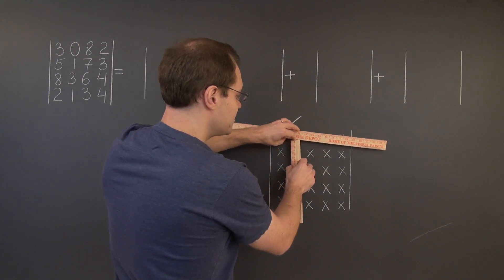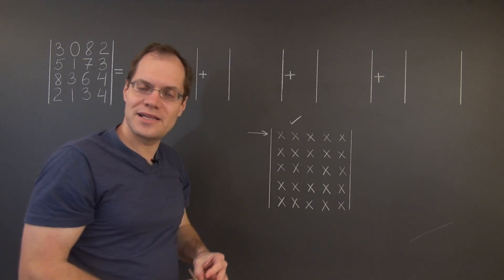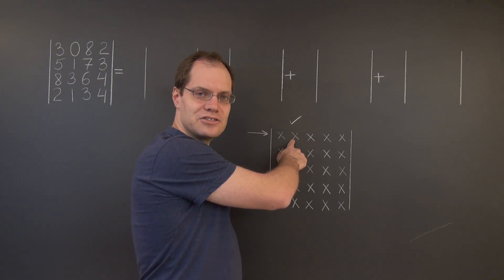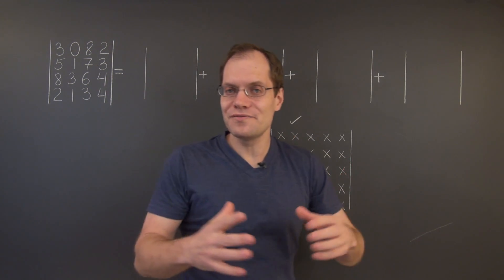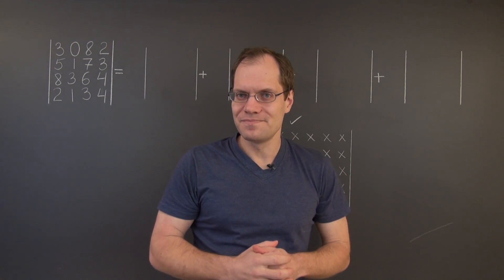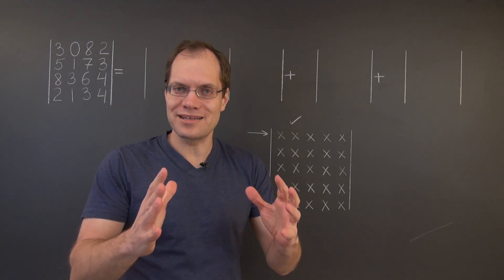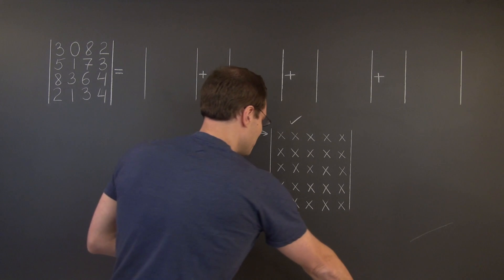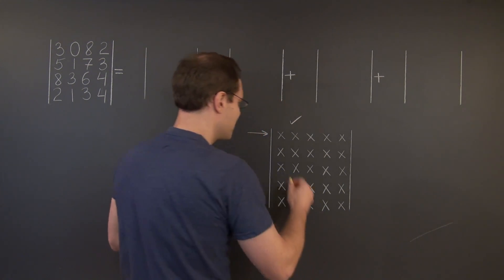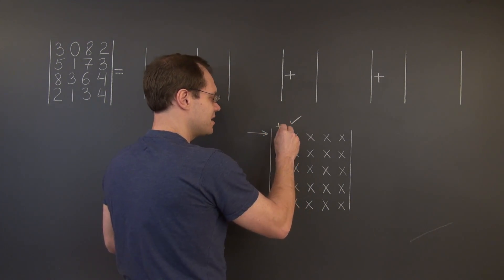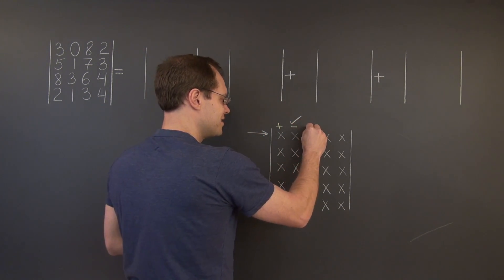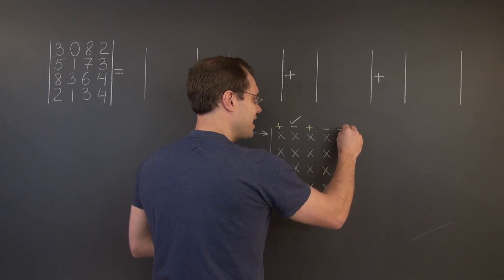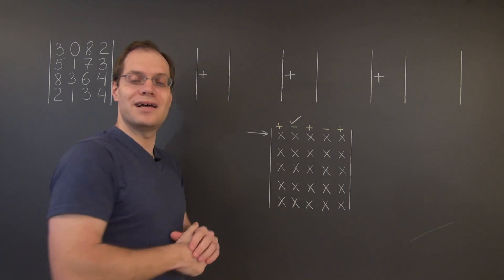What you will do is evaluate that smaller determinant, multiply by the associated entry, and add all of them together. But you will not add them directly — you will add them with alternating signs. It will go like this: the first entry will come with a plus sign, the next one with a minus, the next with a plus, the next with a minus, and the final one with a plus.